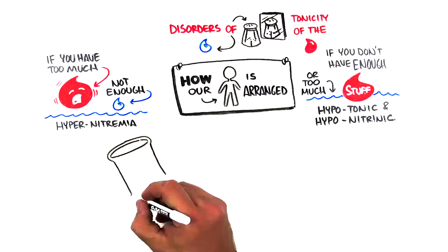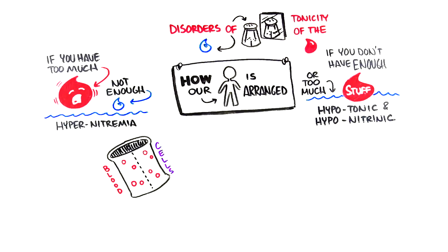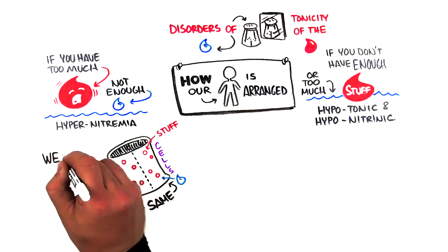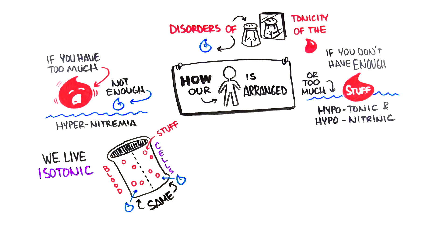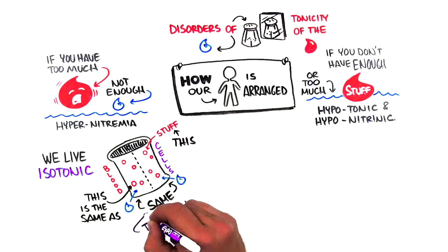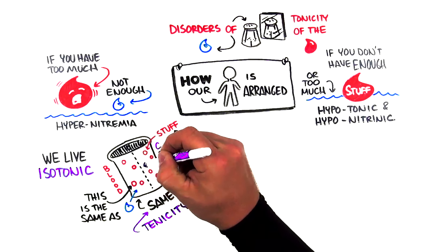Our body is set up something like this. The blood and the cells are separated by a semipermeable membrane with the same amount of stuff on the other side and the same amount of water. All this white space? Water. The circles is the stuff. We live isotonic. That is, the stuff in the blood is the same as the stuff in the cells and the tonicity is the same. And it's that way because of the semipermeable membrane.